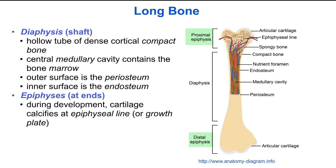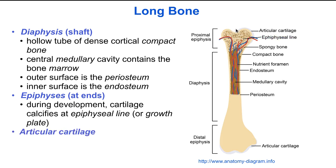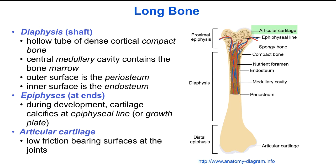During development, the bone starts out as cartilage and calcifies at the epiphyseal line or growth plate, so that the bone calcifies outwards from the middle. When the bone is mature, the only cartilage that's left is the articular cartilage that forms the low friction bearing surface at the joints.